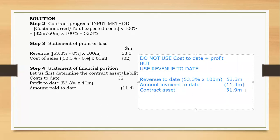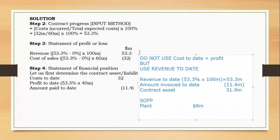When preparing the statement of financial position, under non-current assets I would have the plant with a carrying amount of 8 million dollars — we had a plant of 16 million depreciated by 8 million. Then I would have the contract asset valued at approximately 41.9 million dollars. That is how this transaction would be presented.